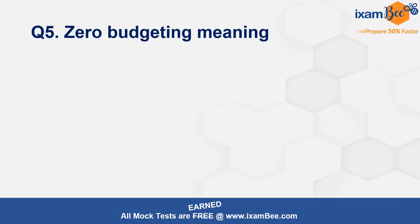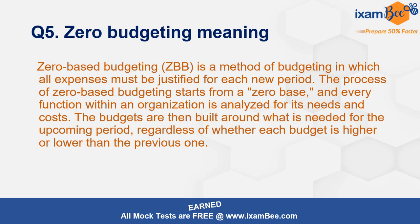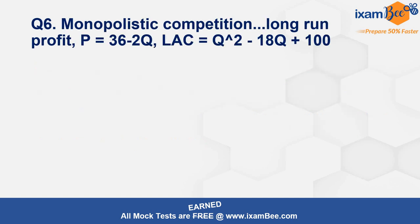The next question was on zero budgeting. Several statements were given and you had to identify what zero budgeting stands for. Essentially, zero budgeting is a process where all expenses are justified from scratch for each period — the budget is built around what is needed for the upcoming period, irrespective of whether it is higher or lower than the previous one.